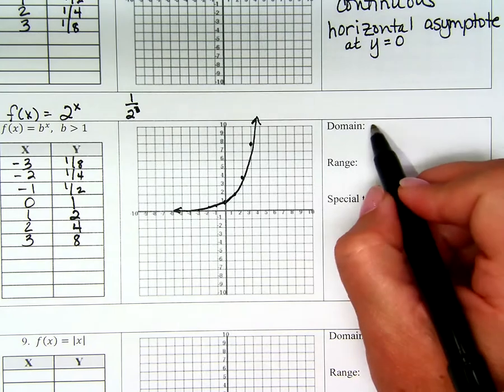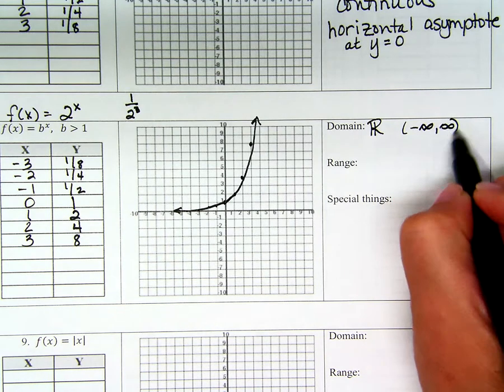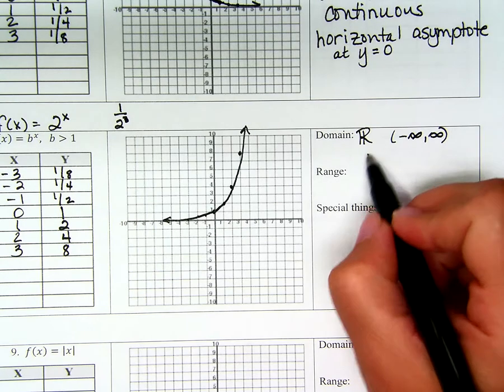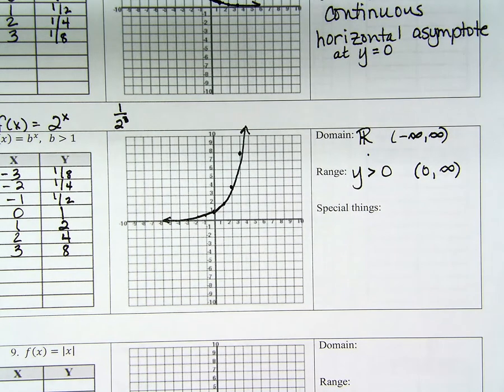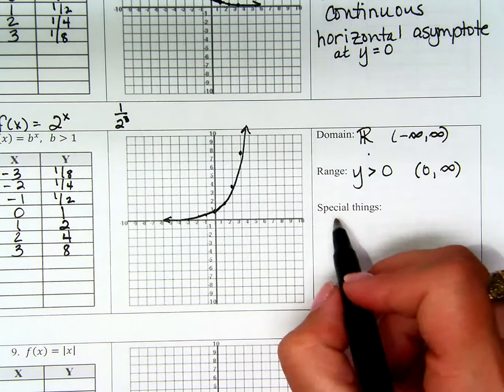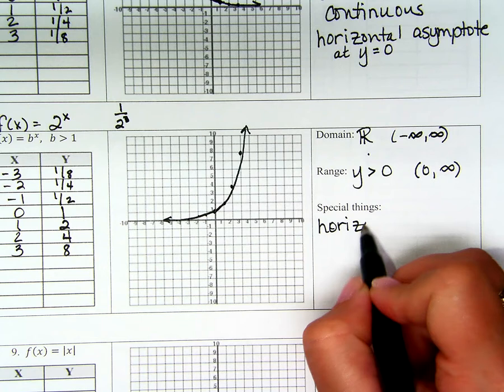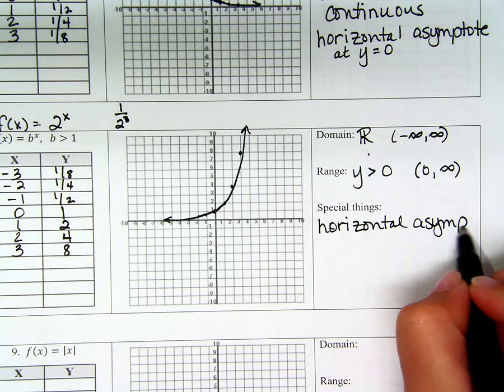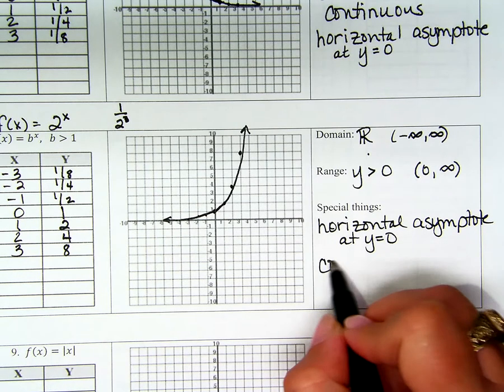What's the domain? All real, so negative infinity to positive infinity. What's the range? Y is greater than 0, so parenthesis 0 to infinity. Special things? There's another horizontal asymptote at y equals 0 and it is continuous.